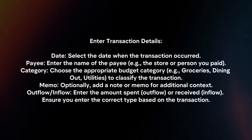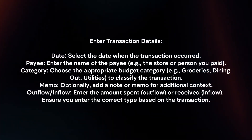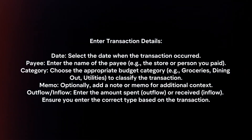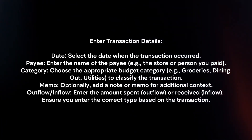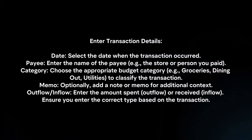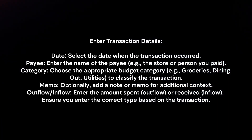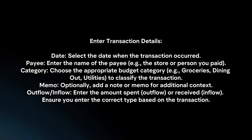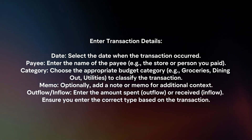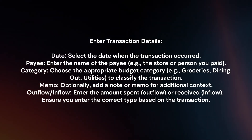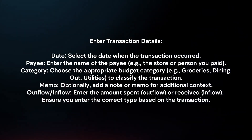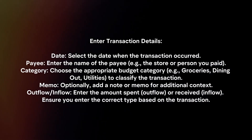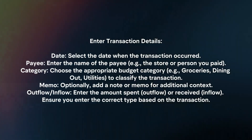Enter the transaction details. Date: select the date when the transaction occurred. Payee: enter the name of the payee. Category: choose the appropriate budget category to classify the transaction. Memo: optionally, add a memo for additional context. Outflow or inflow: enter the amount spent or received, and ensure you enter the correct type based on the transaction.